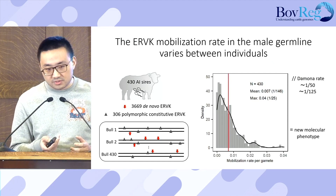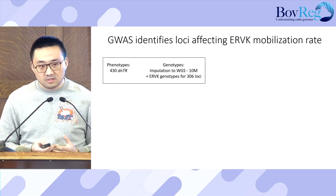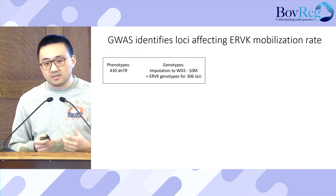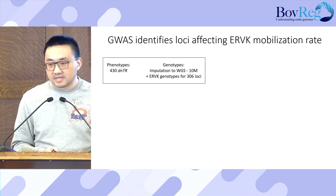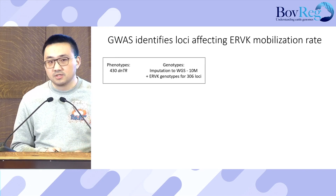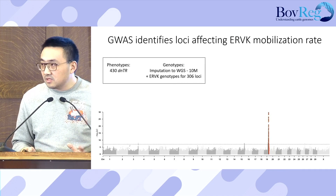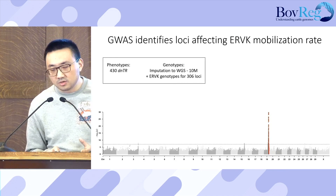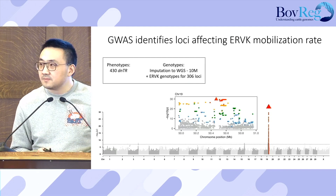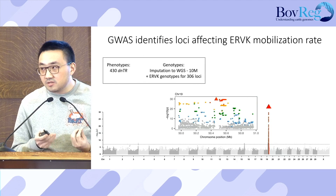We then asked whether there is any genetic contribution to this variation. To answer the question, we performed a genome-wide association study with the phenotype from 430 animals, 10 million genome-wide SNPs, plus the genotype of 300 ERVK insertions. As you can see, we found a major peak on chromosome 19. If we zoom in on this GWAS peak, the top SNP is an ERVK element itself.